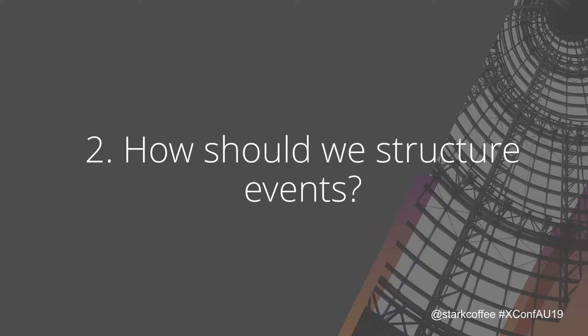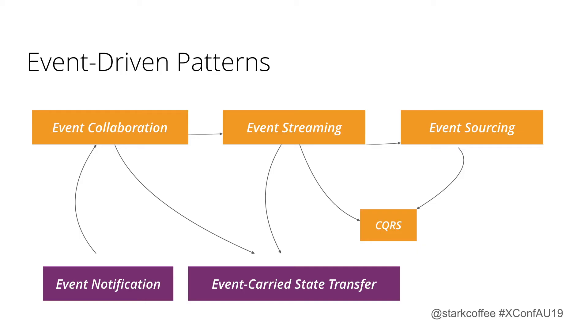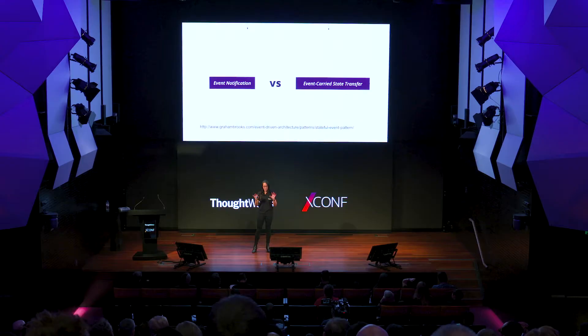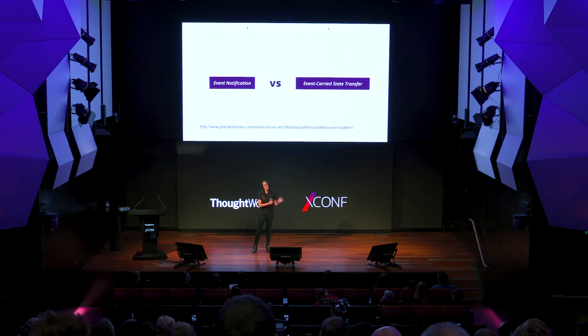Question two: how do we structure events? Going back to the patterns, event notification and event-carried state transfer make real sense when looked at together. Event notification is a bit more of a relic of the past — you publish that something happened, provide an ID and a link for people to call back to get the information. You don't really want to do this because the consumer then has to call back to the producer and you lose the loose coupling benefit. Event-carried state transfer, on the other hand, says to provide the data relevant to the event in the event itself so the consumer doesn't have to call back.